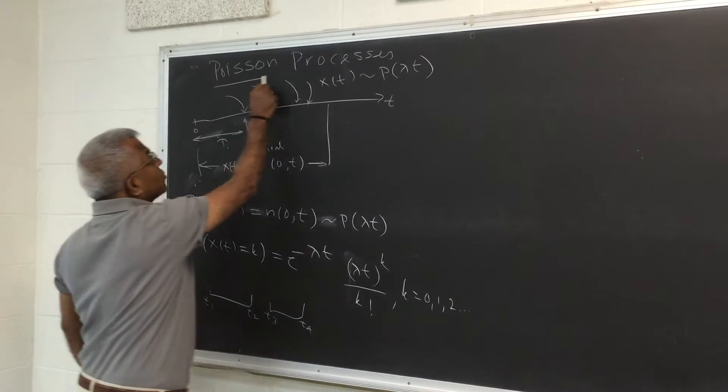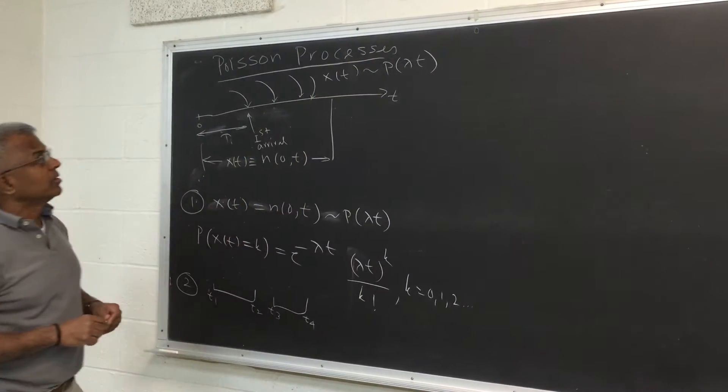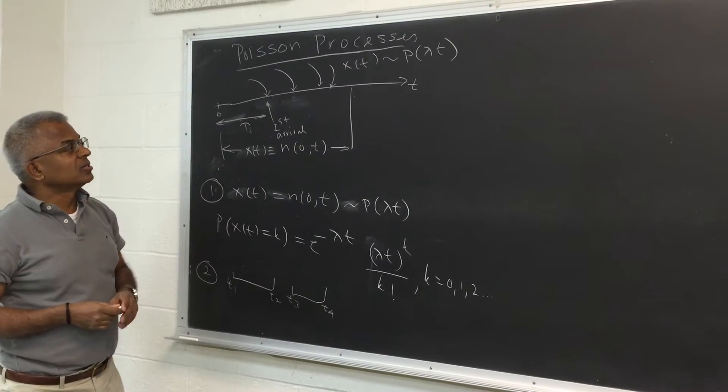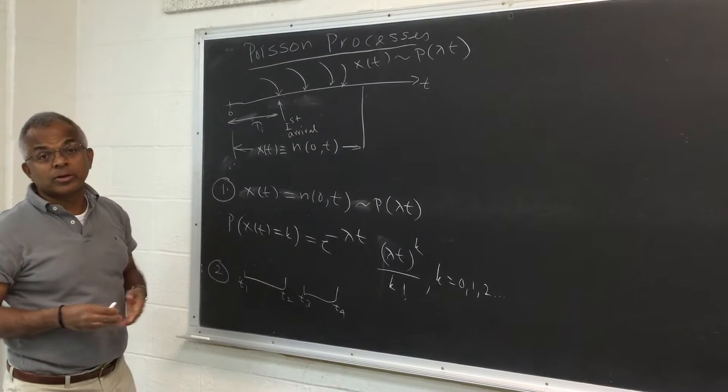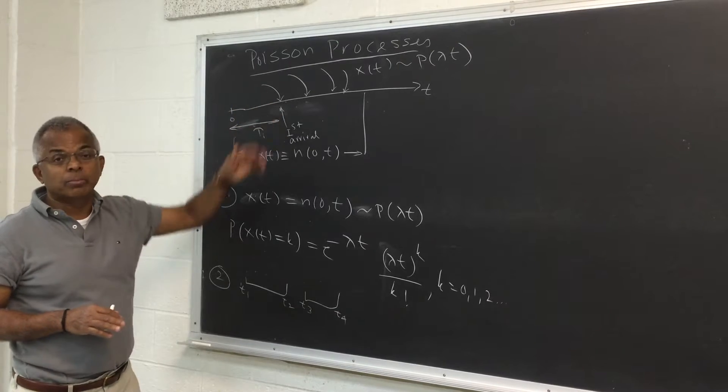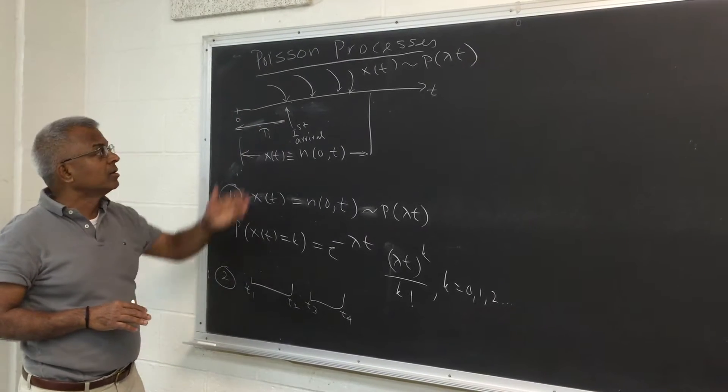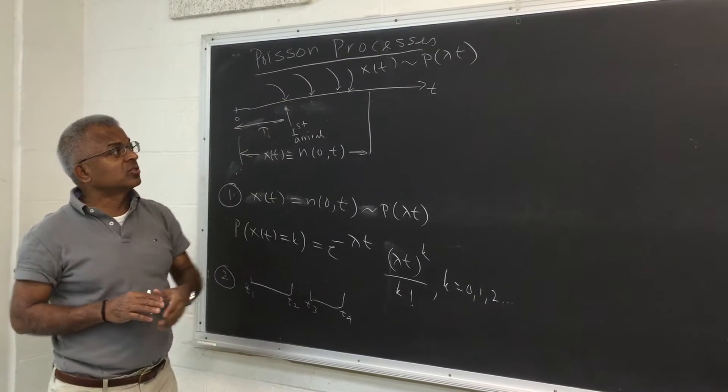We'll talk about Poisson processes and some of its properties. Essentially it's an arrival or departure process. Things happen, things are arriving randomly. You can see the arrival instances are random.